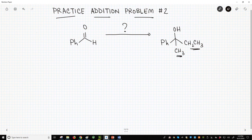Instead of fully analyzing this problem before we start, let's just start and see what we can do. The product alcohol has two new groups, a methyl and an ethyl. Let's go ahead and add one of these groups, let's say the methyl, and then see what we can do after that.